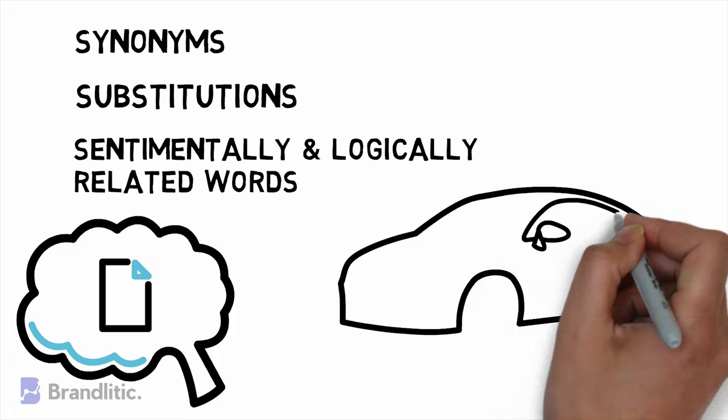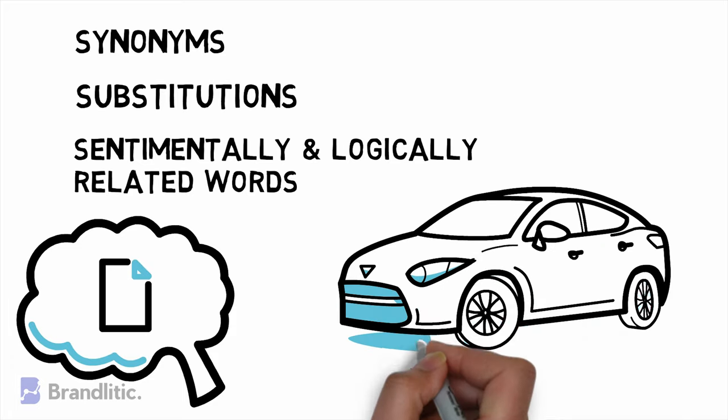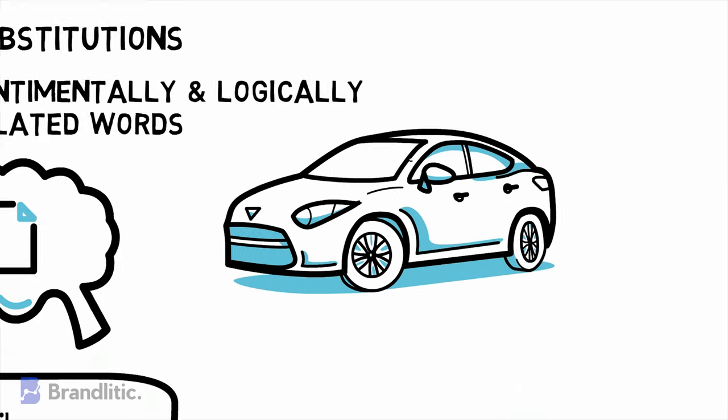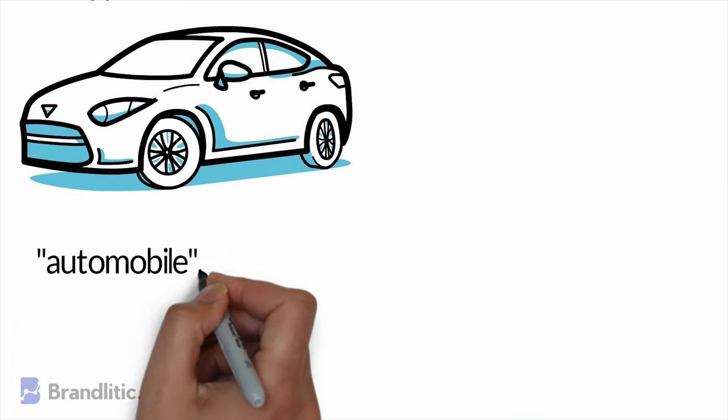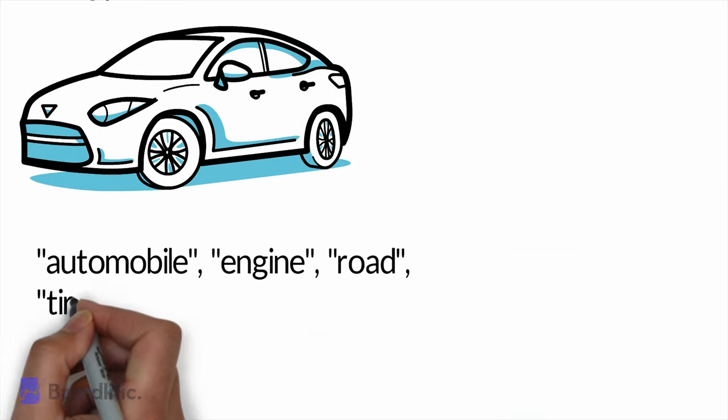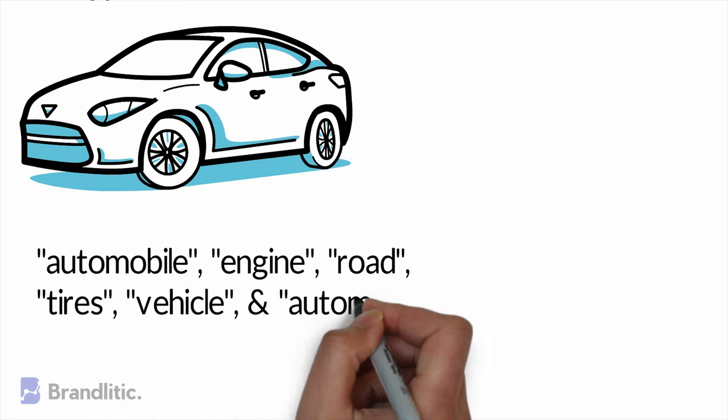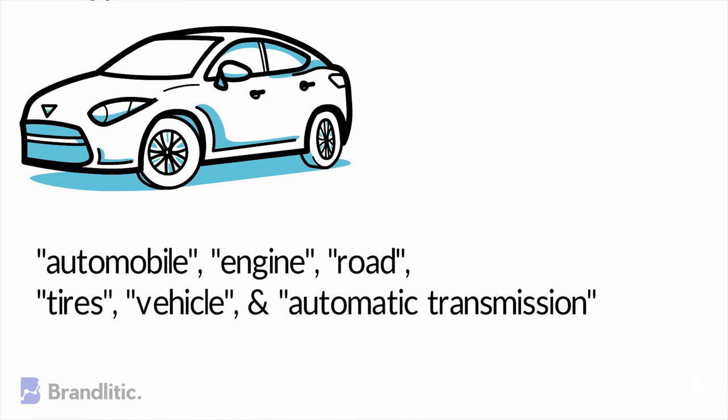For example, if you are talking about cars, then LSI keywords might be Automobile, Engine, Road, Tyres, Vehicle, and Automatic Transmission.